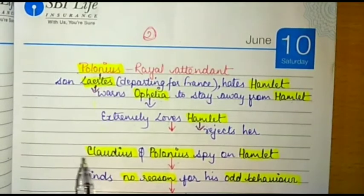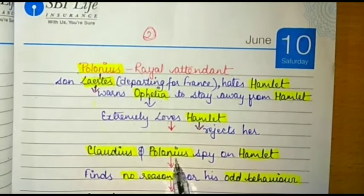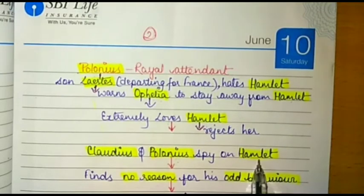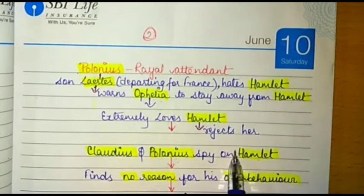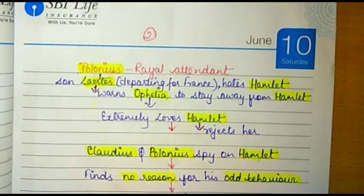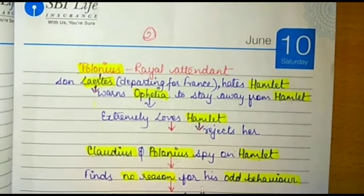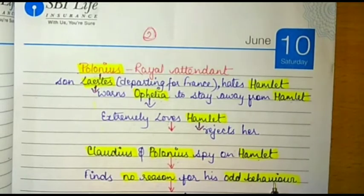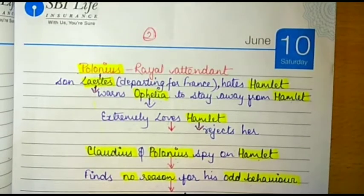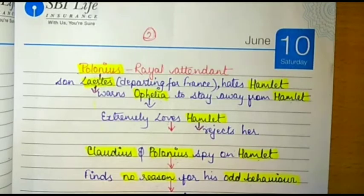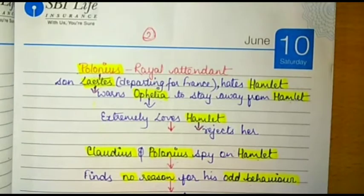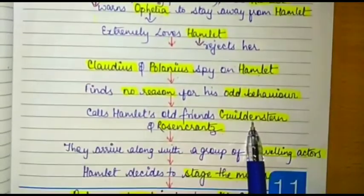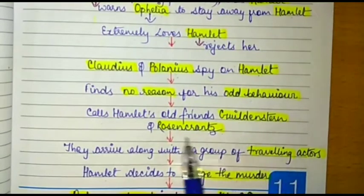Now Claudius and Polonius started spying upon Hamlet because he was behaving oddly. They found no particular reason behind this odd behavior. Claudius then calls Hamlet's old friends Guildenstern and Rosencrantz to understand and find out the reason behind Hamlet's odd behavior.